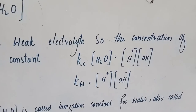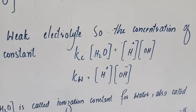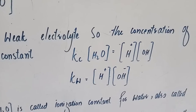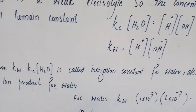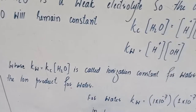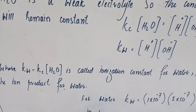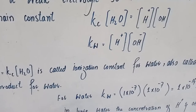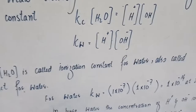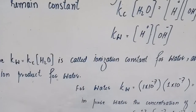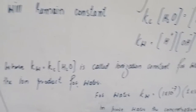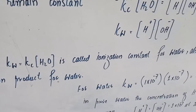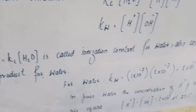Therefore, Kw equals concentration of hydrogen ions multiplied by concentration of hydroxyl ions, where Kw equals Kc × [H₂O]. This is called the ionization constant for water, also called the ion product for water.